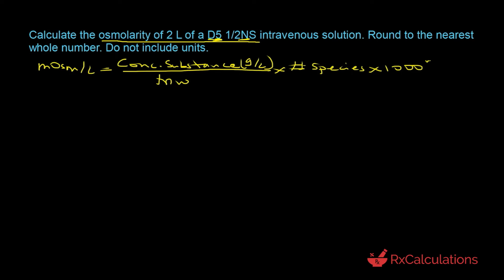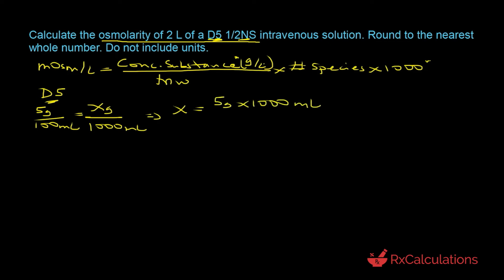For dextrose 5%, since it is a 5% solution, that means 5 grams per 100 milliliters. Scaling to a liter: x equals 5 grams times 1000 milliliters divided by 100 milliliters, which equals 50 grams per liter. A useful trick: for any percentage solution, simply move the decimal one place to the right to get grams per liter. The molecular weight of dextrose is 180 grams per mole. Since dextrose is a non-electrolyte and doesn't dissociate, the number of species is 1.